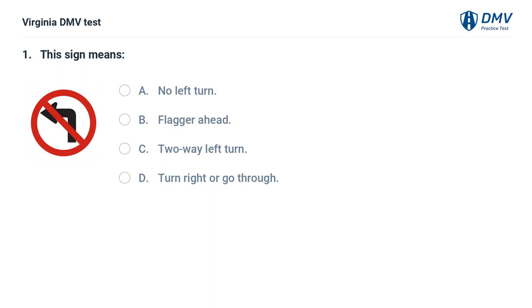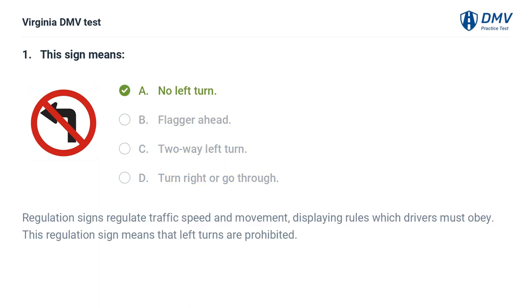This sign means: A. No left turn, B. Flagger ahead, C. Two-way left turn, D. Turn right or go through. The correct answer is A: No left turn. Regulation signs regulate traffic speed and movement, displaying rules which drivers must obey. This regulation sign means that left turns are prohibited.